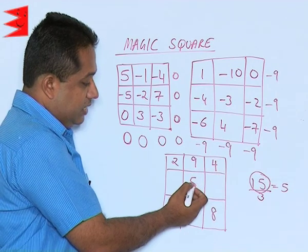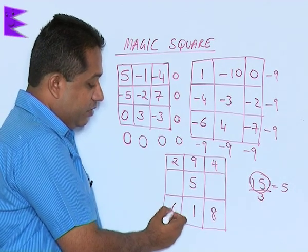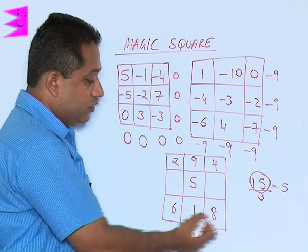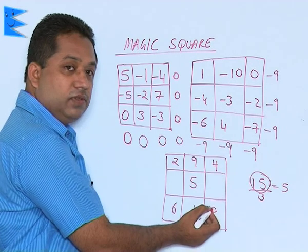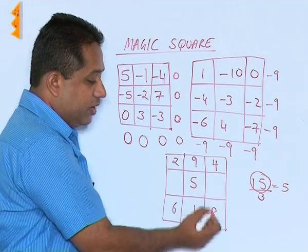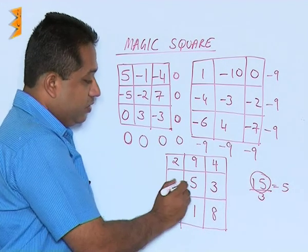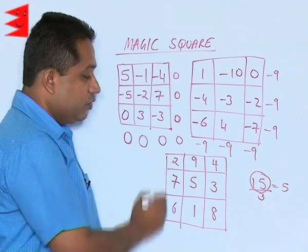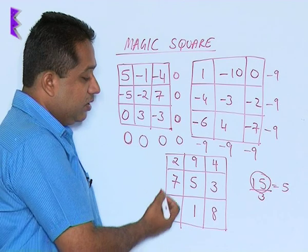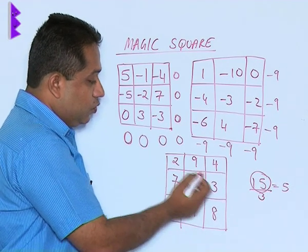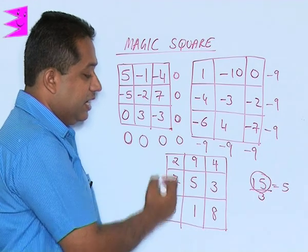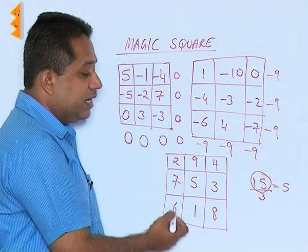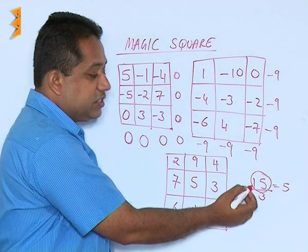Look at this diagonal: 4 and 5 is 9, so 15 minus 9 gives us 6. Adding up 8 plus 1 is 9, and 9 plus 6 is 15 — so this total is correct. Now 8 and 4 is 12; since the total should be 15, the remaining number here will be 3. 5 plus 3 is 8, and 8 plus something should give 15, so this number will be 7. We have constructed a magic square using the numbers 1 through 9 — none of the numbers are repeating — and if you total it in any manner, either in rows, columns, or diagonals, the total in each case will be 15.